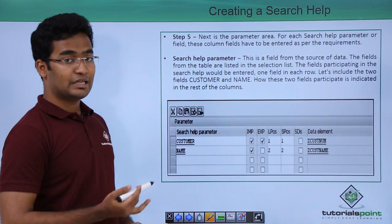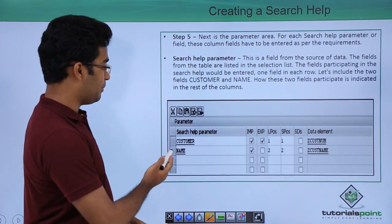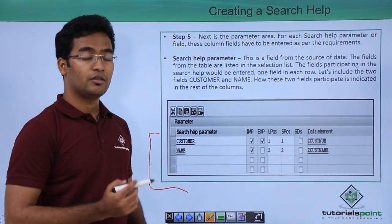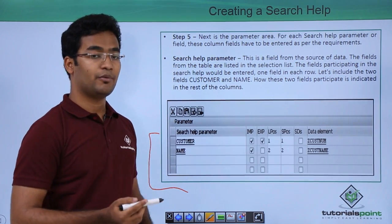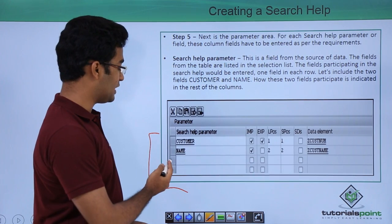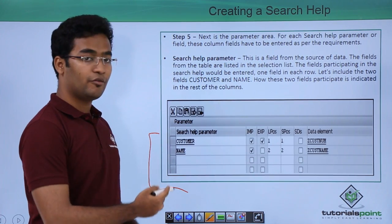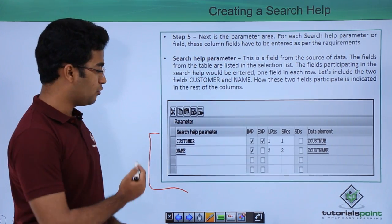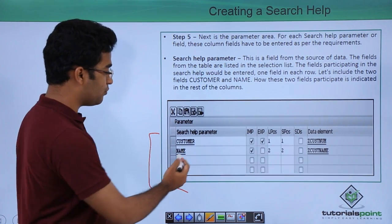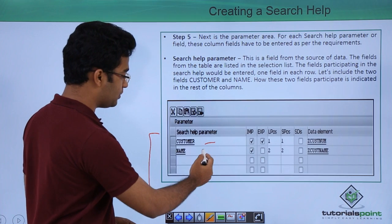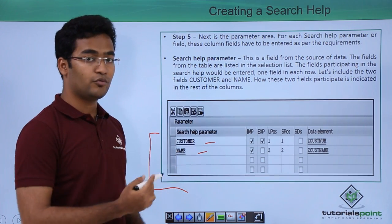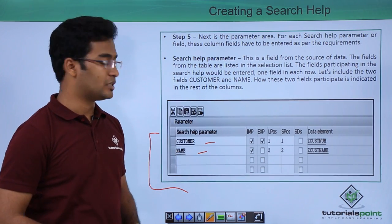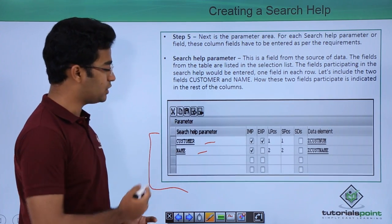The next step is the parameter area. Here we mention the search help values from the previous table. In the previous table there were two fields — customer and name — and based on these two values we configure our search help.